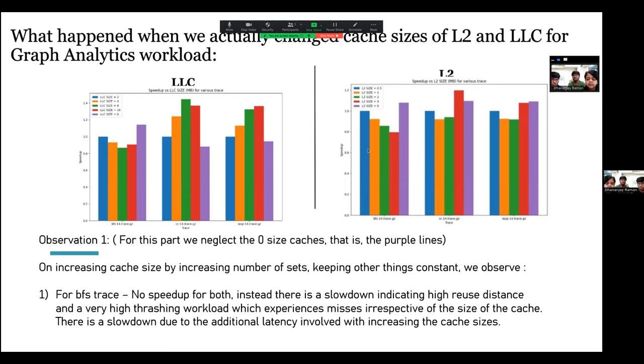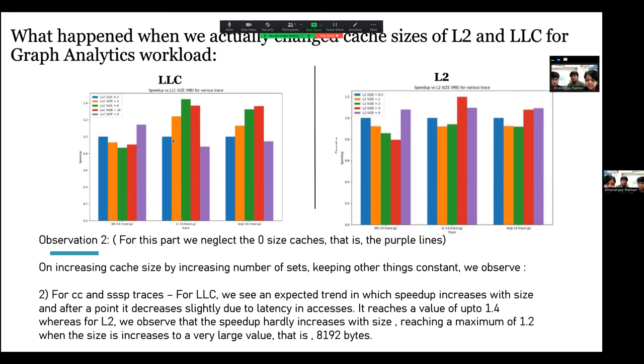Now we'll go over the trends. Observation number one, we start with the BFS trace. We see that it is a very pathological trace because instead of the speedup, we observe a slowdown as the size increases. This indicates high reuse distance and a very high thrashing workload, which experiences misses irrespective of the size of the cache. But for the connected components and shortest path traces, we see that for the LLC, there is a gradual increase. And after a point, there is a little decline due to latency in accesses. But for the L2, we see here that the performance is very insensitive to the change in size. And it only increases when the L2 is made very large.